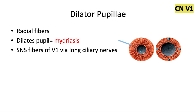Bringing it all together — every nerve discussed in this video, cranial nerves 3, 4, V1, and 6, are the four nerves transmitted via the superior orbital fissure that we covered in our foramen video. That's exactly why, because it opens into the orbit and all four nerves are able to supply all of these different eye muscles. That's why I love anatomy — it builds on itself and all makes sense when you put it together in the big picture.